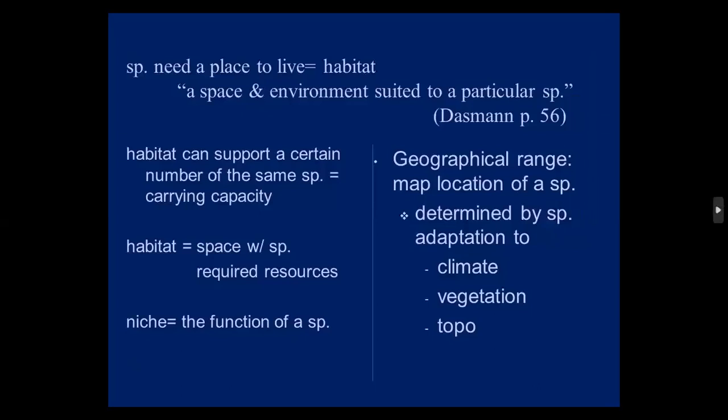Species need a place to live, and that means habitat — a space environment suited to a particular species. Habitat can support a certain number of species, and that's its carrying capacity. Above that number, or when you approach it, animals are going to start to get stressed and there won't be enough resources to survive. Habitat is space with the species-required resources, and the niche is the function of the species in that community.